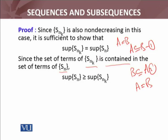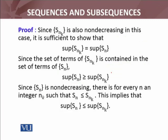Since s_{n_k} is a subsequence of sn, it is a subset, so the supremum of sn is greater than or equal to the supremum of s_{n_k}. Now using the monotonicity condition — sn is non-decreasing — for every n there exists n_k ≥ n such that sn ≤ s_{n_k}. For each arbitrary element sn, due to monotonicity we can find a subsequence term satisfying this inequality. This implies sup{sn} ≤ sup{s_{n_k}}.